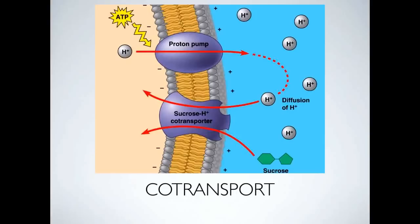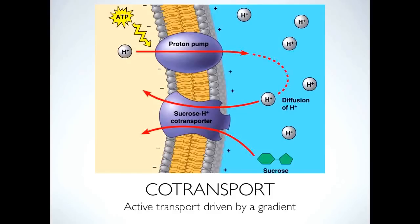The next topic in active transport is co-transport. There is a proton pump pumping H+ ions out of the cell, and below that is a sucrose co-transporter. All of those H+ ions rush back down through the pump, and when one H+ bonds to the pump, sucrose is also able to bond and they go through together — like a friend telling a doorman, 'he's with me.' Energy is spent on the proton pump to set up an electrical gradient, and then that gradient provides the energy for the co-transporter, allowing the sucrose to go in along with the H+ ions.